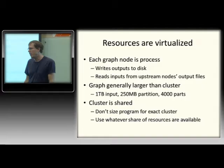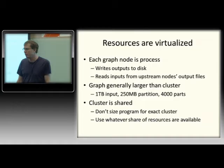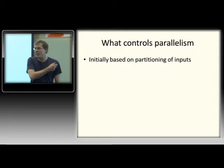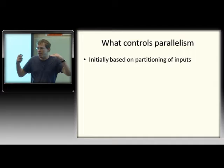We use commodity server hardware — a couple of thousand dollars a box. What controls the degree of parallelism? At the very beginning of your job, it's dictated by the number of parts in your input sets. If you start with a select, that will run one process per part in your input set. After a data reorganization, the system tries to make a sensible decision about the number of parts based on type system information about the likely amount of data reduction.